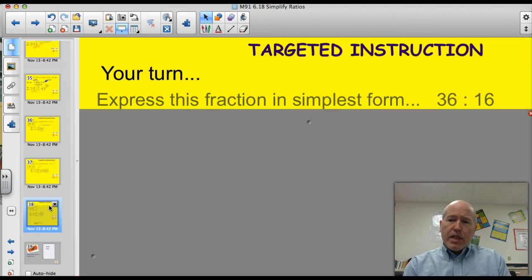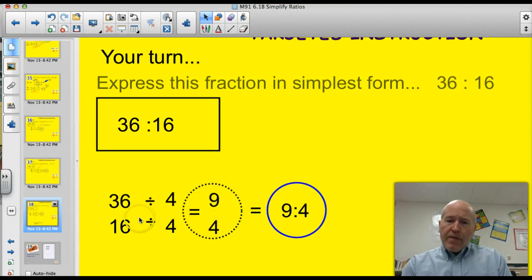I think I got one more for you before you take it to the show. Here you go. Give this one a shot. 36 to 16. All right. Let's check it out. Well, I divided both of them by 4. And I got the ratio of 9 to 4. And so studying that 9 to 4, are there any other common factors? No. So my ratio of 9 to 4 is in simplest form.